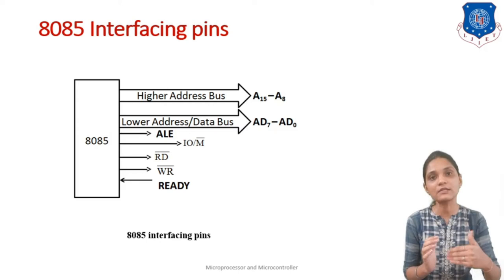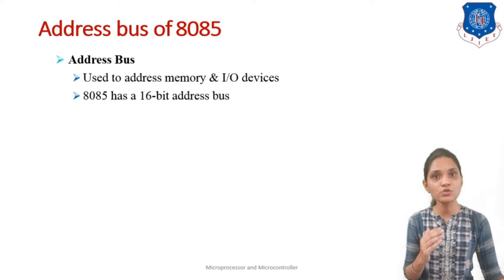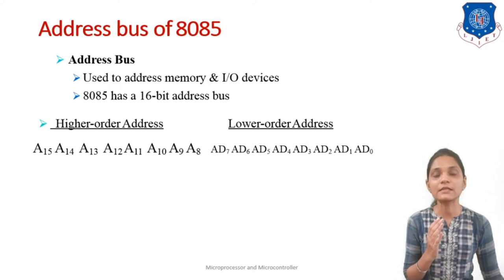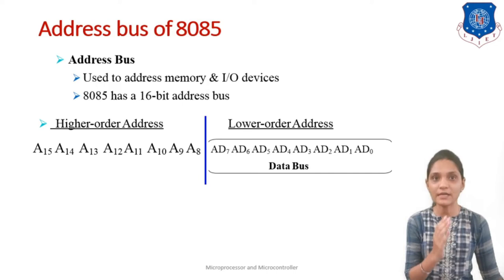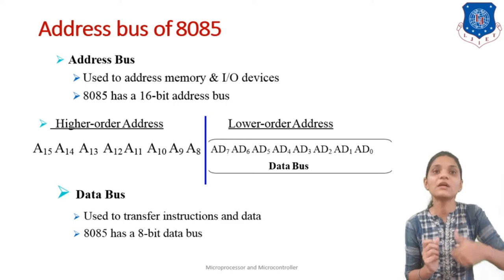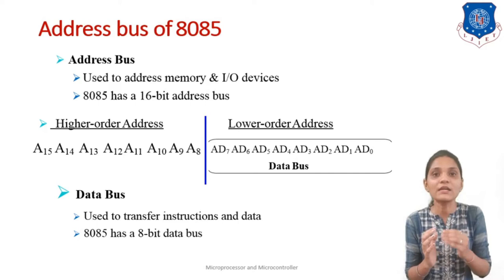The address bus has a total of 16 bits, so we have 16 lines on the address bus and it is used to address memory as well as IO devices. A15 to A8 are the higher order address bus and AD7 to AD0 are the lower order address bus, which is also your data bus. The data bus is 8 bits but it is multiplexed with the lower order address bus. When used as address bus it transfers the address; when used as data bus it transfers data or instructions.